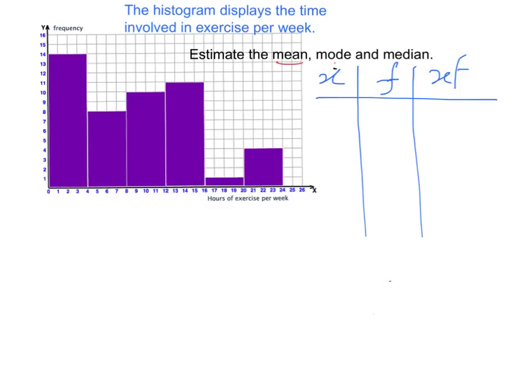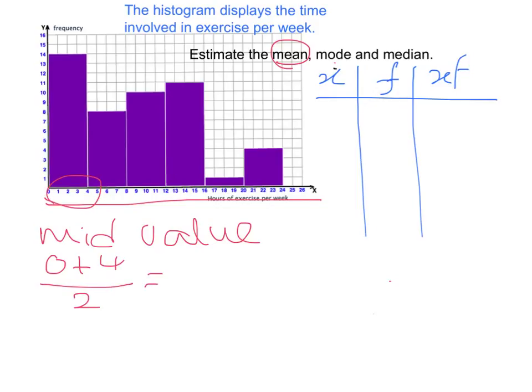Next we look at the mean. First, we can think of this as continuous data and we need to find a value to represent each of this group. And one of the representations is the mid value in the interval. So for example, in this case, 0 plus 4, this particular group, 0 plus 4 divided by 2, that's just 2. So the mid value is 2.